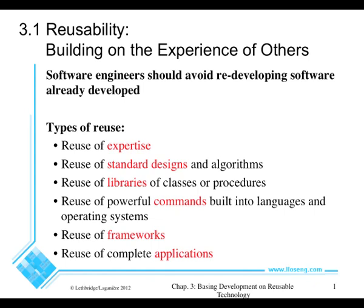Reusability is all about building on what other people have done. As you can see here on this slide, there are a number of different types of things we can reuse. We can start, for example, reusing expertise of people. Expertise means that we're simply asking them what they've done or reading things that they've done and re-implementing that. Another thing we can do is reuse standard designs where people have published and agreed on standard ways of doing things like algorithms for sorting, particular data structures, and so on. We can reuse those ideas and enable ourselves to get work done much faster.